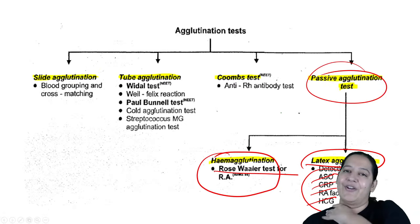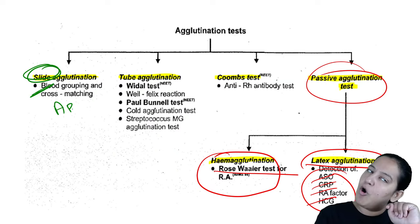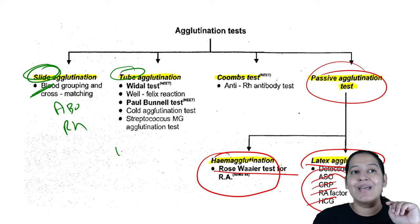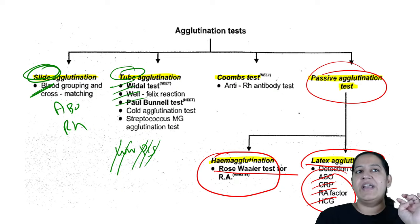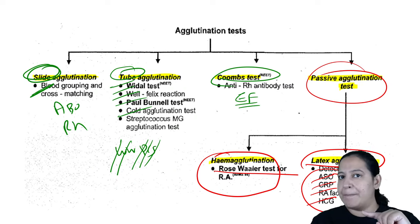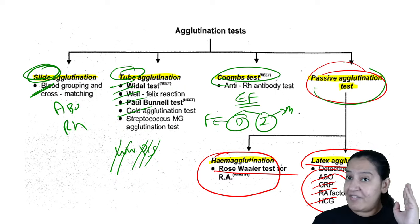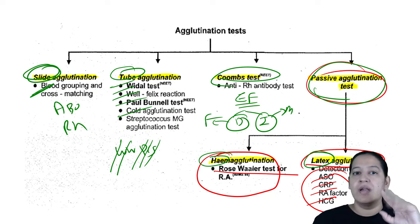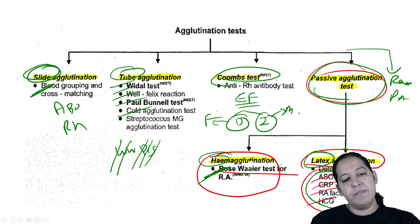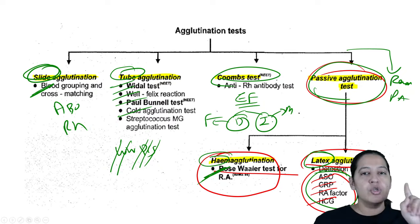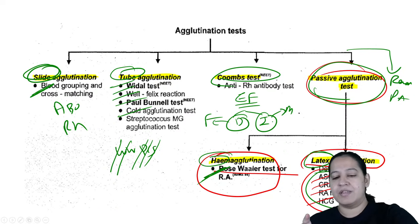Summary of agglutination: slide test — blood grouping and cross matching (ABO and Rh). Tube test — WWPCS: Widal, Weil-Felix, Paul-Bunnell, Cold agglutination, Streptococcus MG. Coombs test — erythroblastosis fetalis; direct (fetus, one step), indirect (mother, two steps). Passive agglutination — hemagglutination (Rose-Waller for RA) and latex agglutination (ASO, CRP, HCG). Reverse passive agglutination — no example. Please revise all precipitation examples alongside these.